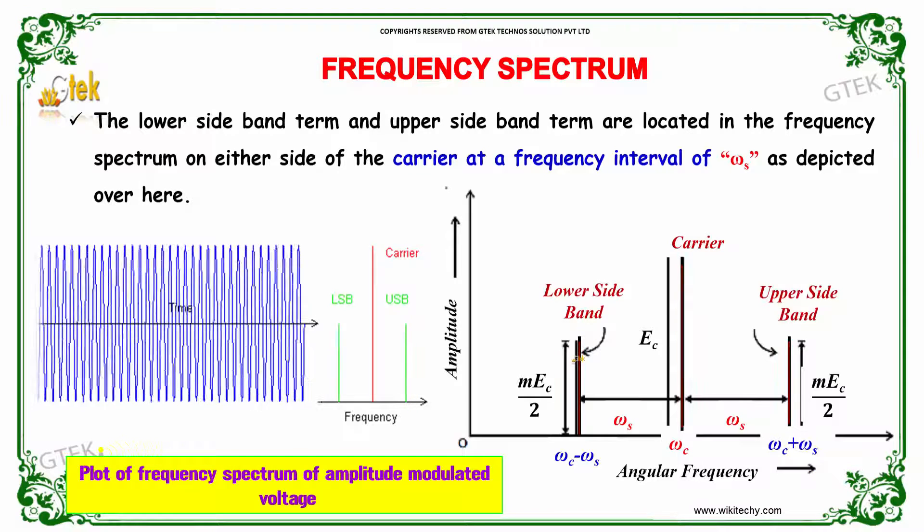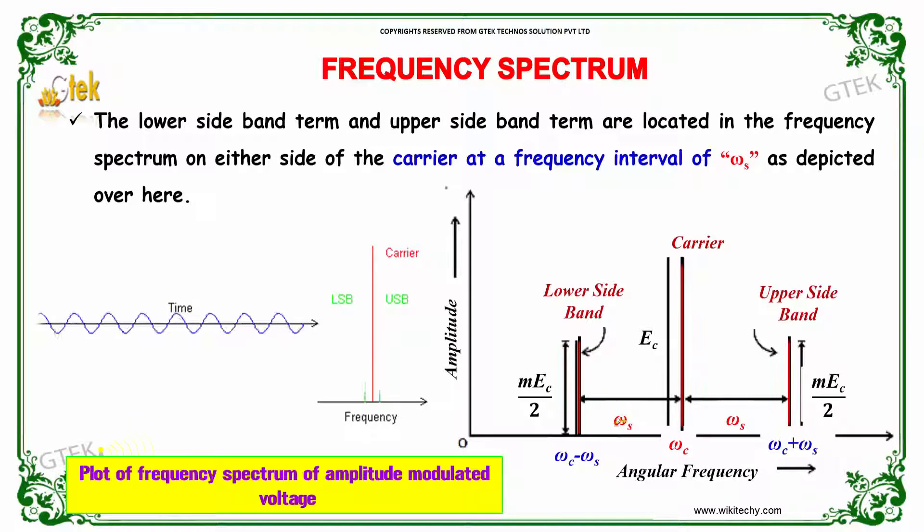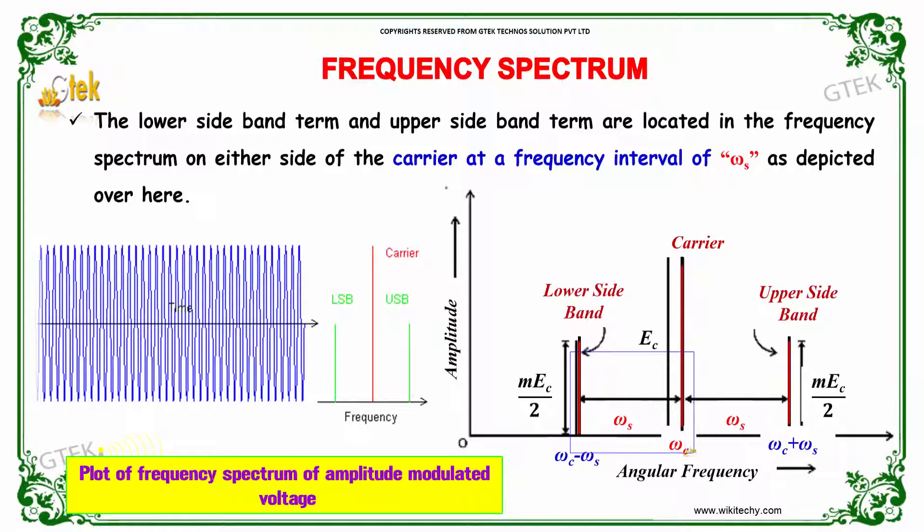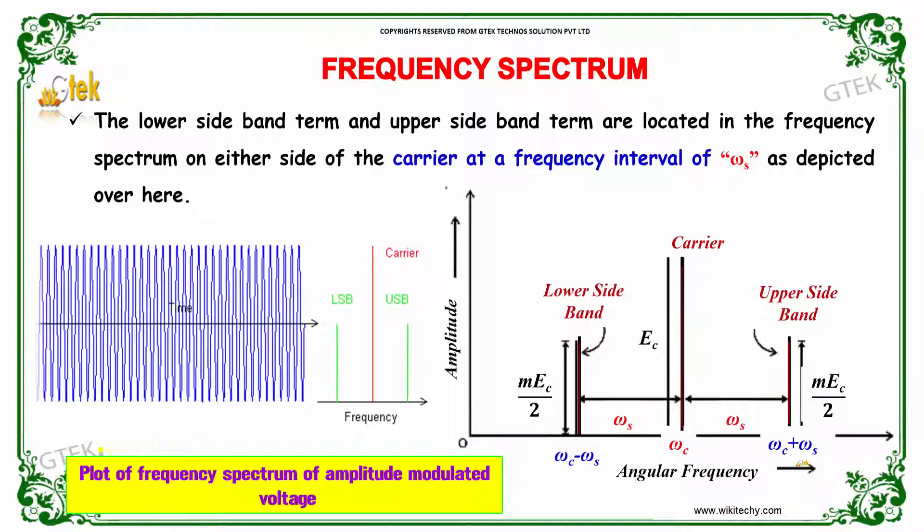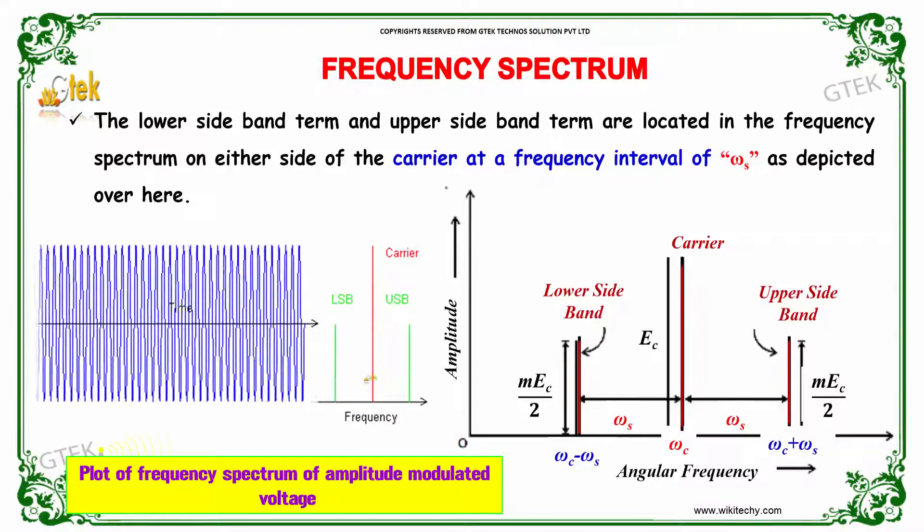On either side of the carrier at a frequency interval of omega_s, as depicted here, you can see omega_s from the center. This is called LSB (lower sideband) and USB (upper sideband), with the carrier in the center.